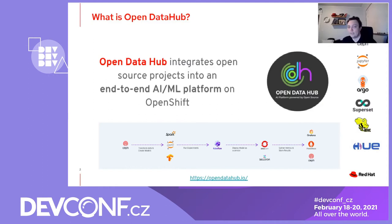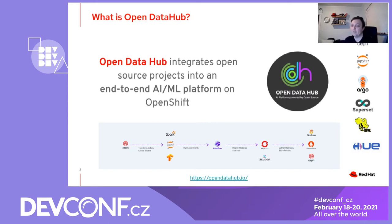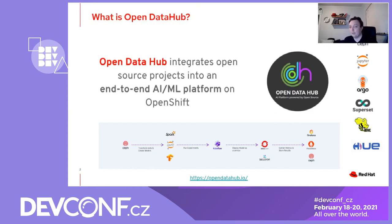As you can see from the myriad of logos here, Open DataHub ties together a number of different technologies like Spark, TensorFlow, Kubeflow, Prometheus, and Grafana. But today we'll be focusing on the tools we actually use for our specific application: Ceph, Jupyter, Argo, Superset, and Hue.